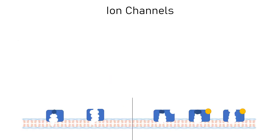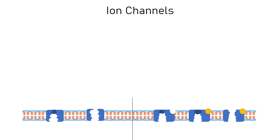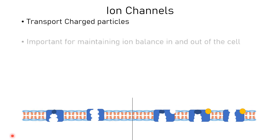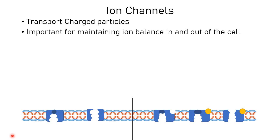Now let's talk about ion channels. Ion channels are simply channels that transport charged particles, and they are important for maintaining ion balance in and out of the cell. The homeostatic balance of ions must be maintained in both the extracellular and intracellular compartments.